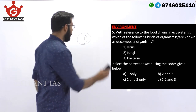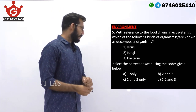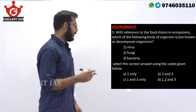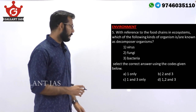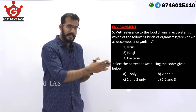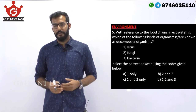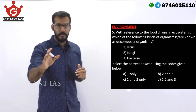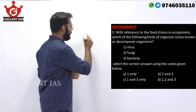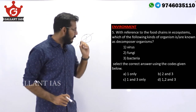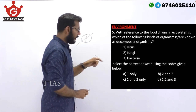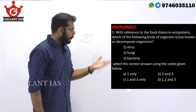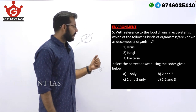Now the last question from environment. With reference to food chains in ecosystems, which of the following kinds of organisms are known as decomposer organisms? Virus, fungi, and bacteria. Of the three given, fungi and bacteria are decomposers — they break down organic matter into simpler compounds. Viruses do invade organisms, but cannot be considered decomposers. So one should not be in your answer. Eliminating options: A is wrong because it includes one; C and D are also eliminated. You rightfully arrive at the conclusion that B — 2 and 3 alone — is your answer.